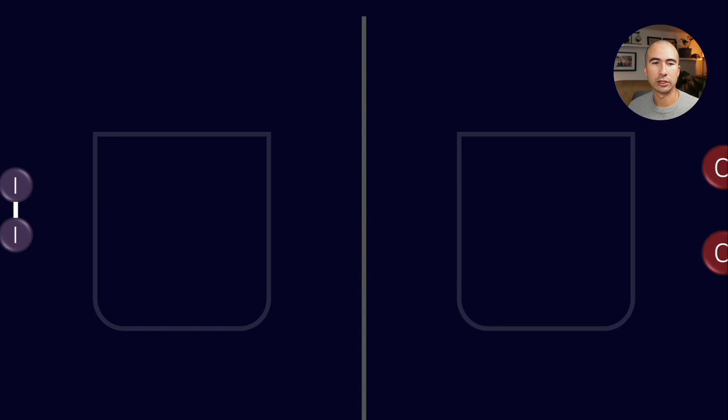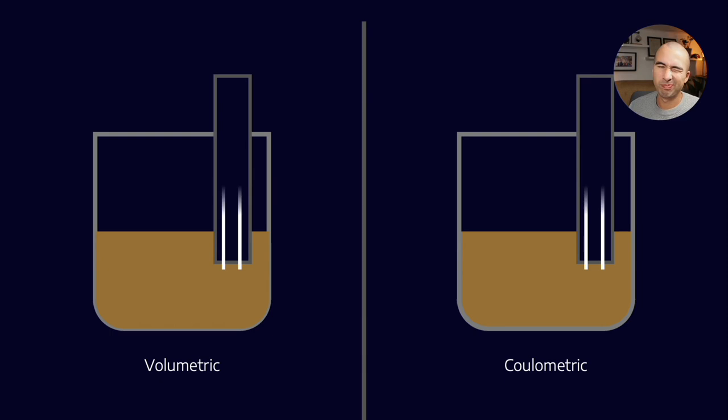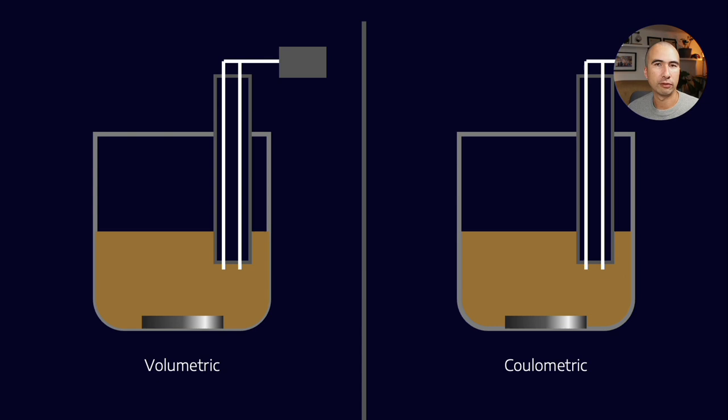So we're going to take advantage of this reaction. Now there's two main methods of doing this: volumetric and coulometric. The methods kind of start off the same, in that we have electrodes which are going to measure the voltage potential, and we have a stirrer that's going to make sure that the solution is all mixed together.